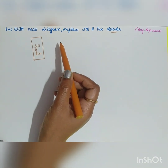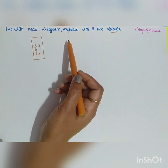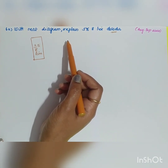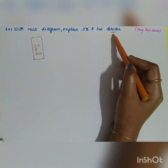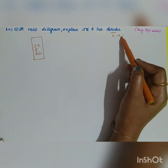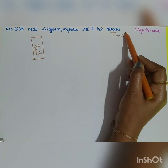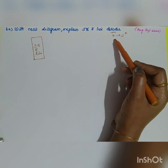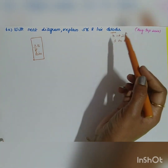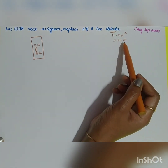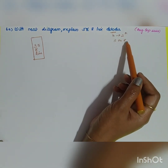The next question is: with a neat diagram, explain a 3-to-8 line decoder. A decoder is a combinational circuit that converts binary information from n input lines to a maximum of 2^n output lines. So n-to-2^n. Since n equals 3, two to the power 3 gives us 8.